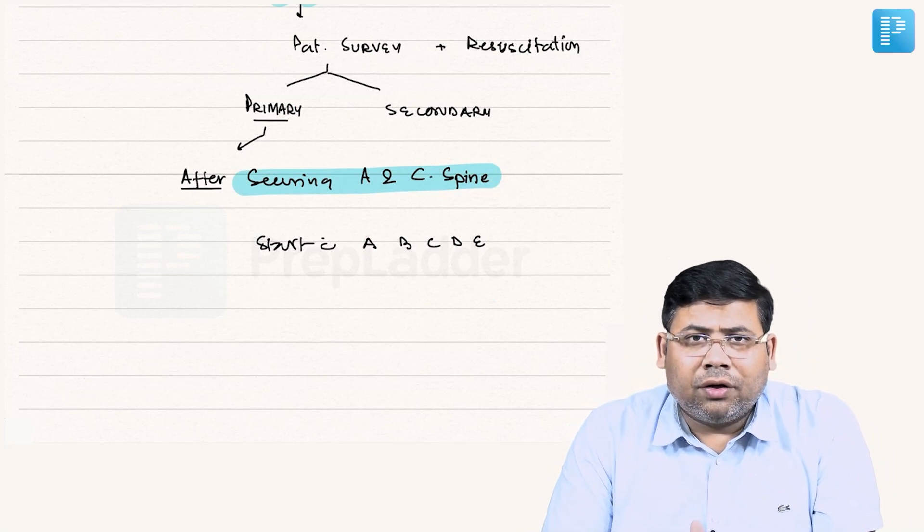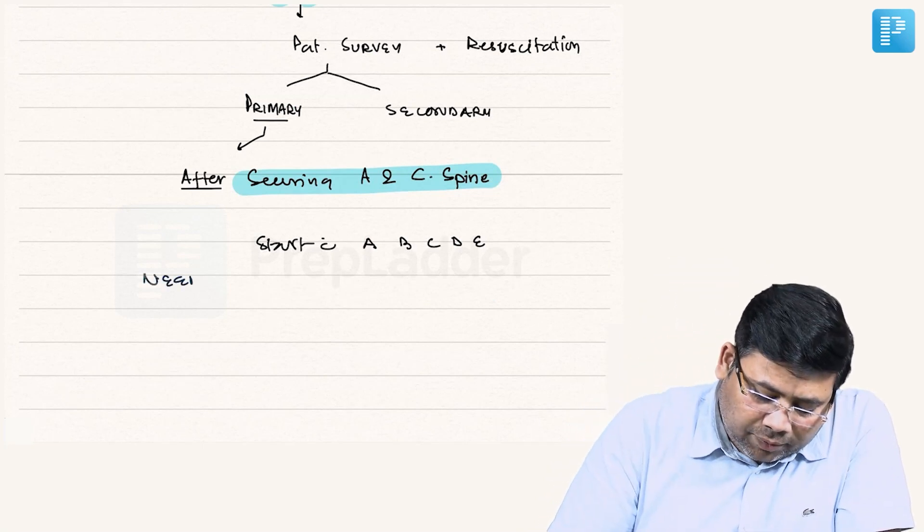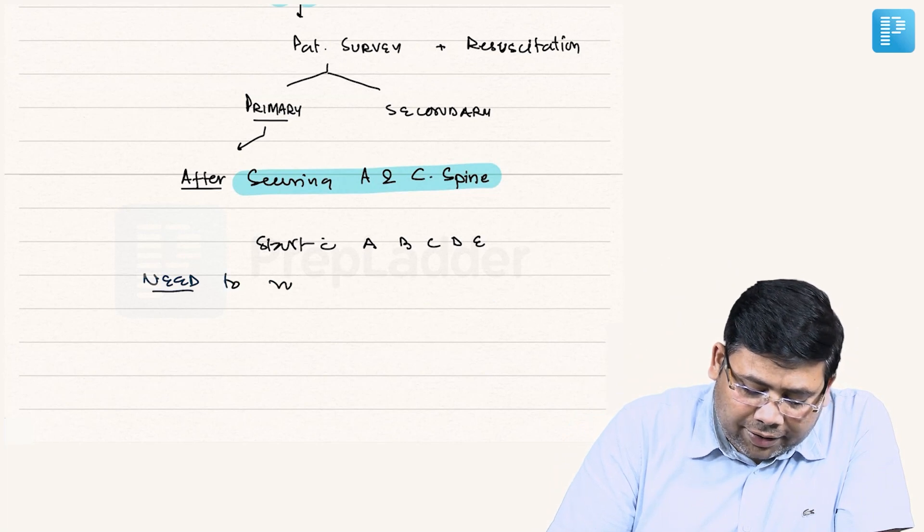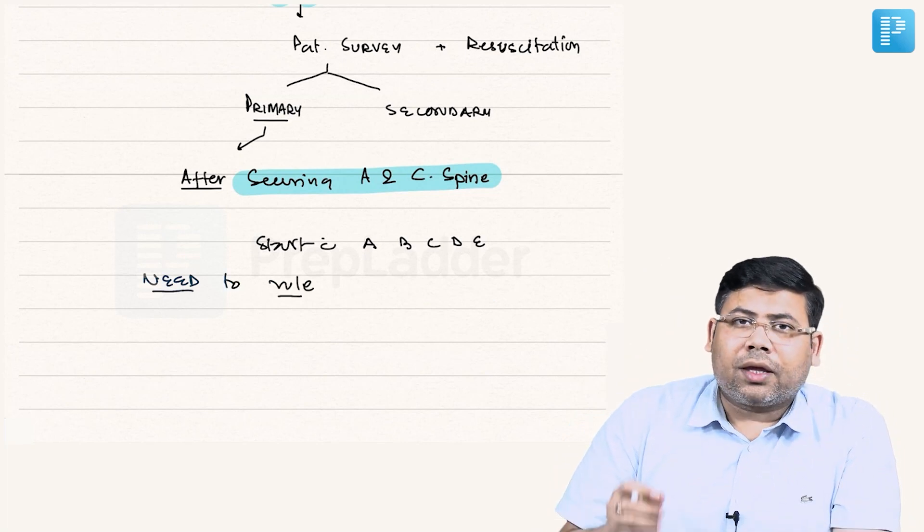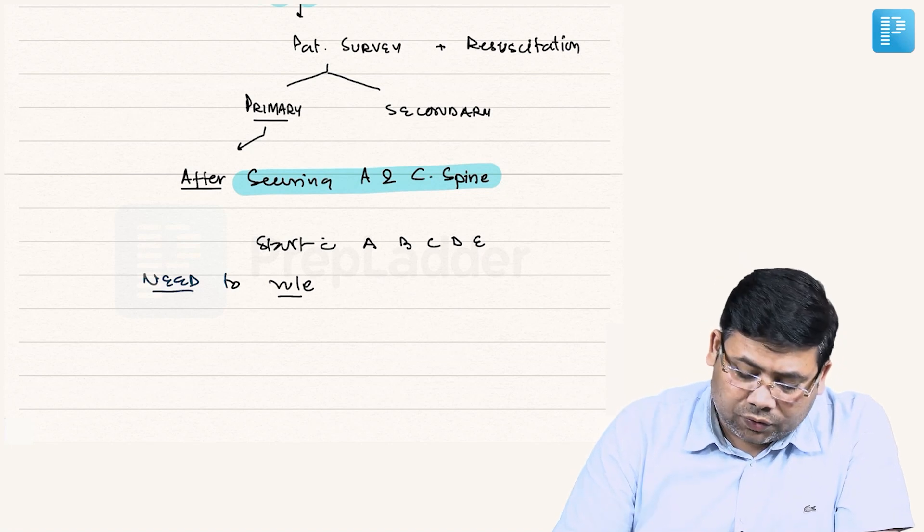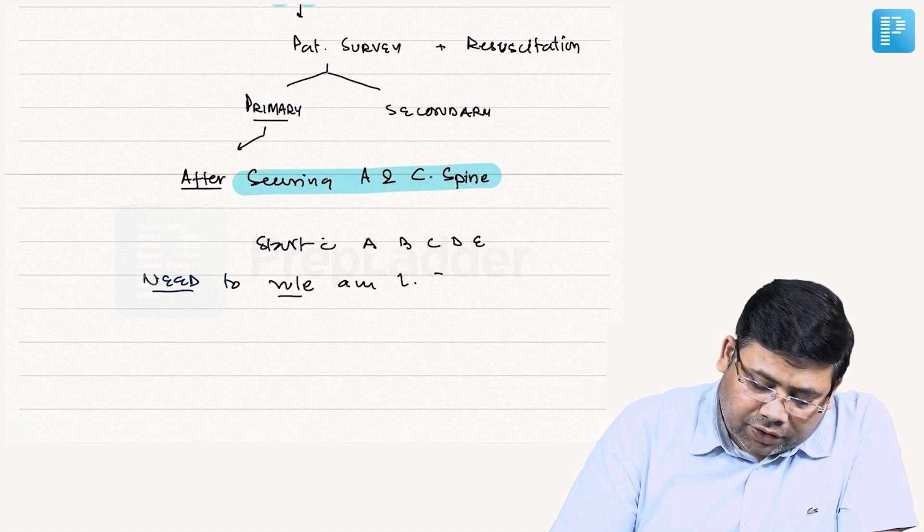Why are they important? We need to rule out—the aim is to rule out any emergency condition which can be life-threatening, to rule out any life-threatening injury.